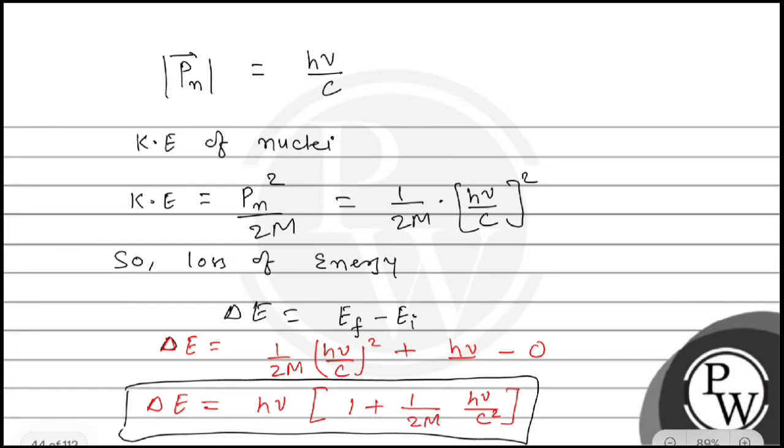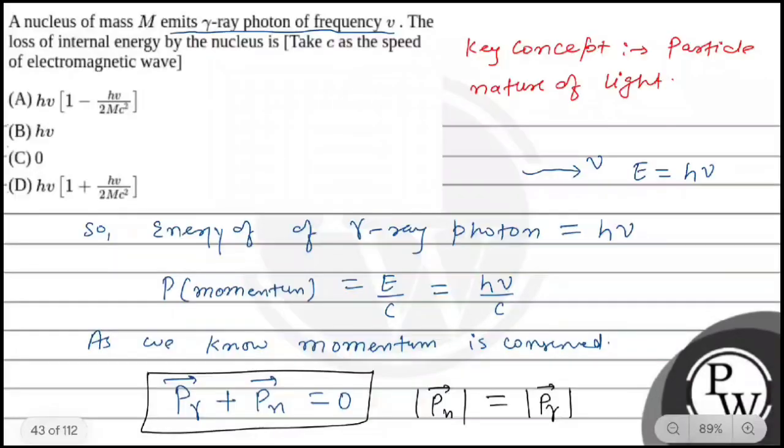So this is our final answer. The final answer is option D, and that is hν(1 + hν/2Mc²). Hope you understood it well, all the best.